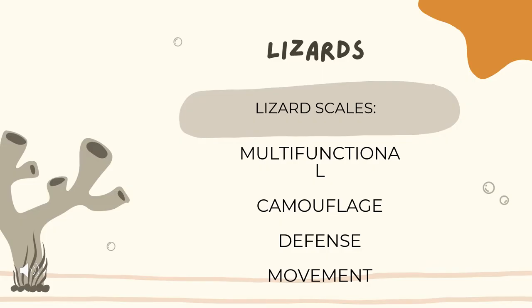Moving on to lizards — lizard scales are multifunctional, serving camouflage, defense, and movement. Scales protect them from everyday wear and tear and are mostly made of keratin, which is both tough and waterproof, ensuring that lizards do not dry out. For camouflage, they blend in with their environment using different colors. For defense, lizards use their scales to keep in moisture as well as to act as a barrier against predators. The third function is movement, as scales aid the animal in moving efficiently.